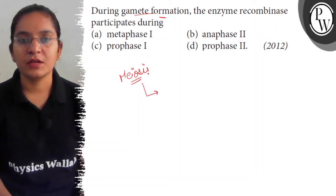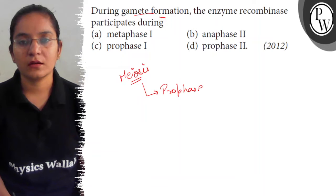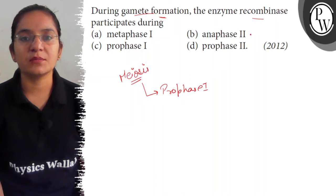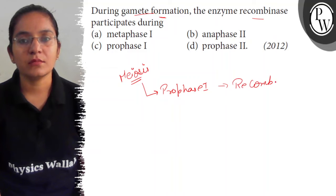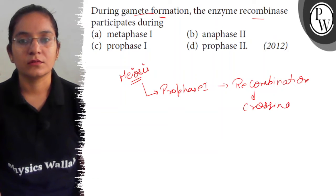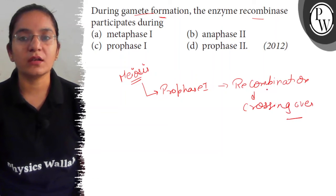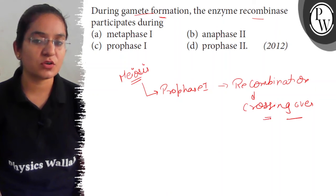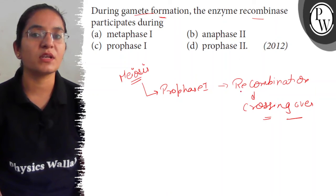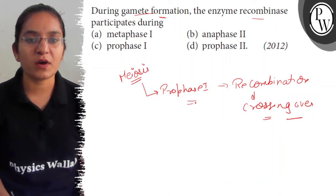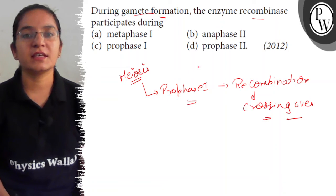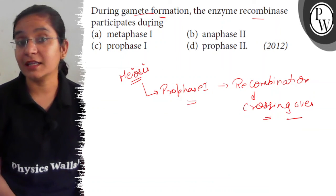In meiosis 1, specifically during prophase 1, the recombinase enzyme is involved in recombination. The enzyme recombinase is responsible for crossing over, which occurs during prophase 1. Therefore, prophase 1 of meiosis 1 is the correct event described in the question.